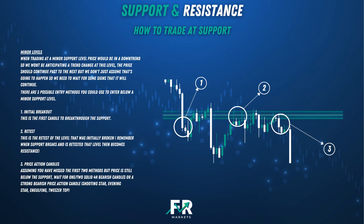How do we trade at minor levels? When trading at a minor support level, price would be in a downtrend so you wouldn't be anticipating a trend change. The price should continue past to the next level, but we need to wait for signs. There are three possible entry methods to enter below a minor support level: 1. Initial breakout — the first candle to break through the support. 2. Retest — the retest of the level initially broken; remember when support breaks and is retested that level becomes resistance. 3. Price action candles — wait for one to two solid 4-hour bearish candles or a strong bearish price action candle such as a shooting star, evening star, engulfing, or tweezer top.